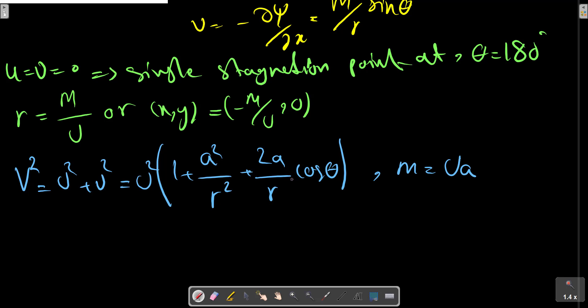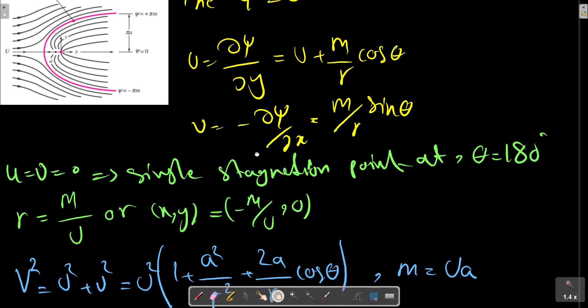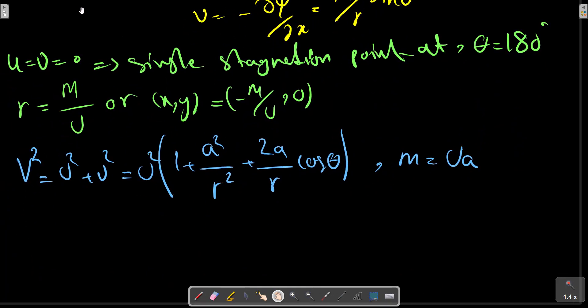If we evaluate the velocity along the upper surface, shown in this picture where ψ equals π m, we find the maximum value of velocity, v_max equals 1.26 U at θ equals 63 degrees.